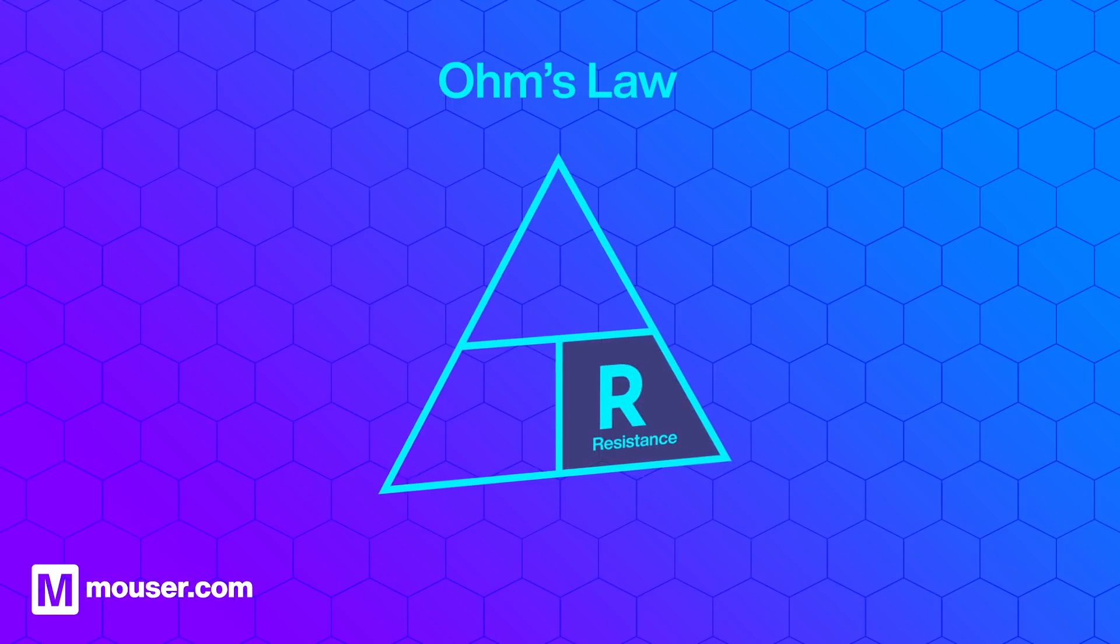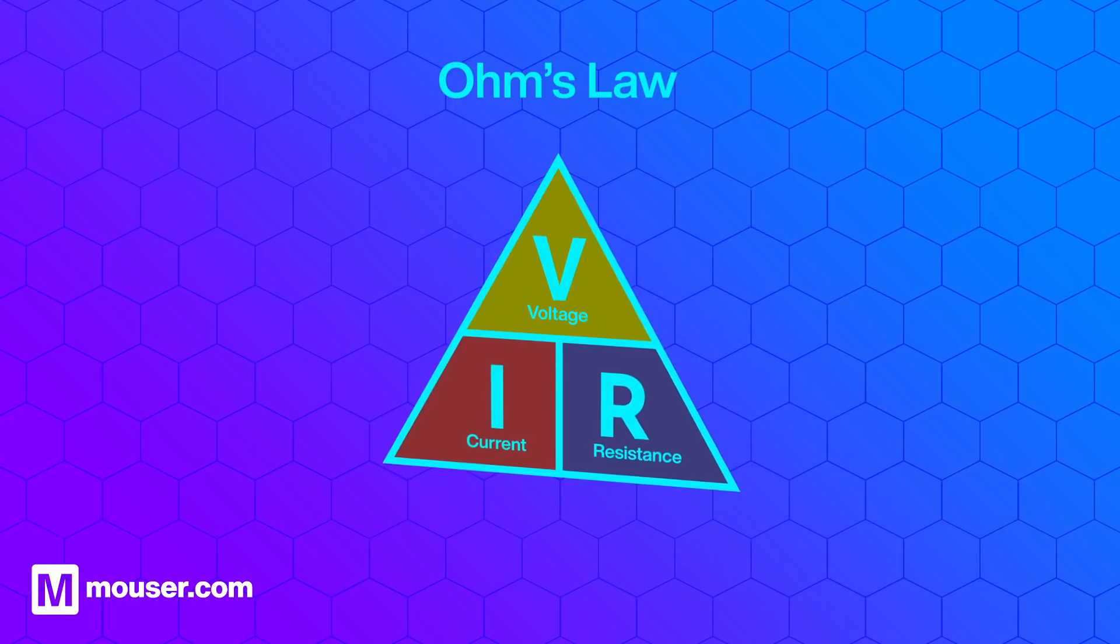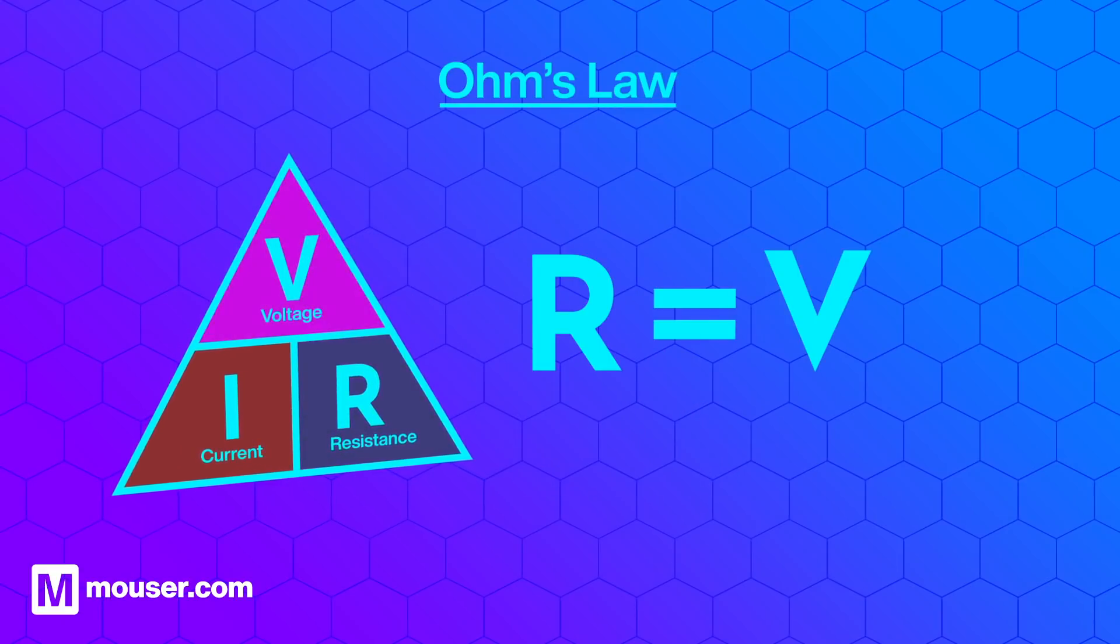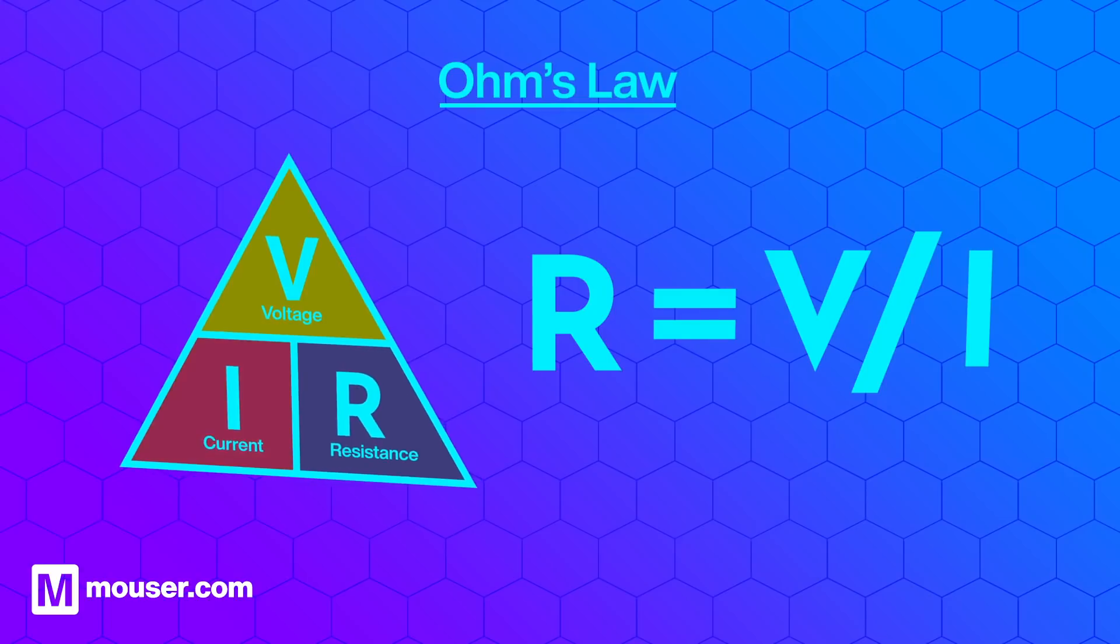Resistance is measured in ohms and is defined by Ohm's law, where resistance, R, is equal to voltage, V, divided by current, I.